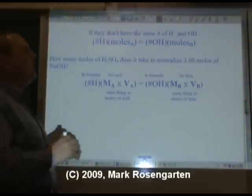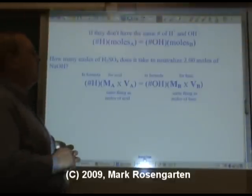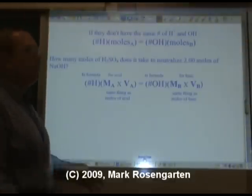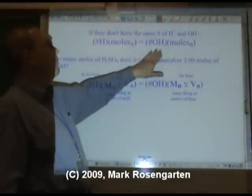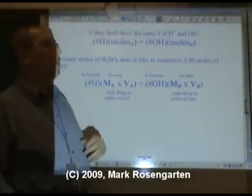If the acid and base do not contain the same number of hydrogens and hydroxides, then you use the formula: number of hydrogens times moles of acid equals number of hydroxides times moles of base.